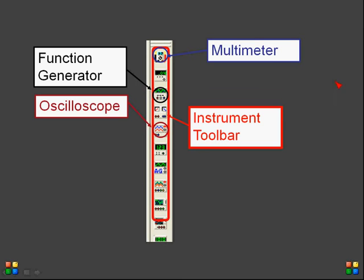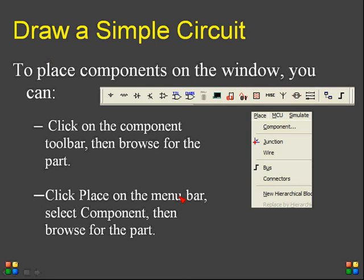On the right-hand side of the circuit window there is one more toolbar — the instrument toolbar — which includes the function generator, oscilloscope, multimeter, and many other laboratory equipment found in an electronics lab. Now I would like to show how to draw a simple circuit and how to simulate it.